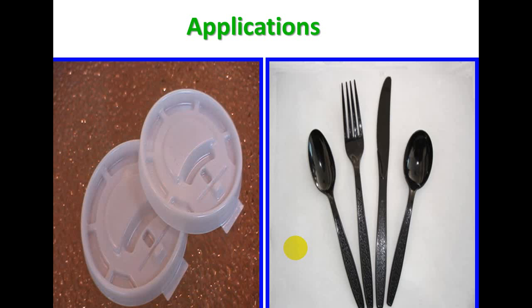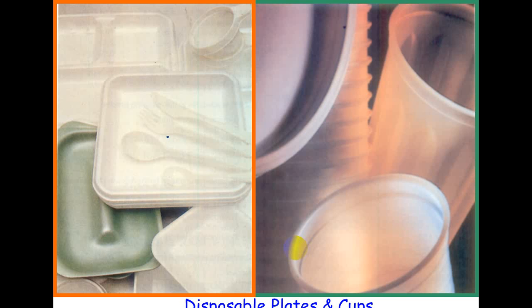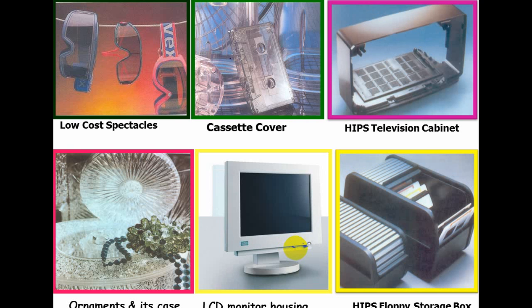Some fields where polystyrene products are available: lids, tablespoons and forks, disposable plates and cups, low-cost spectacles and cassette covers, television cabinets, ornaments, monitor cabinets, and storage boxes. So all these are the fields where PVC and polystyrene become very important and are available in the market. We have discussed in detail in this chapter. We will meet again in the next part of the polymer. Thank you very much.